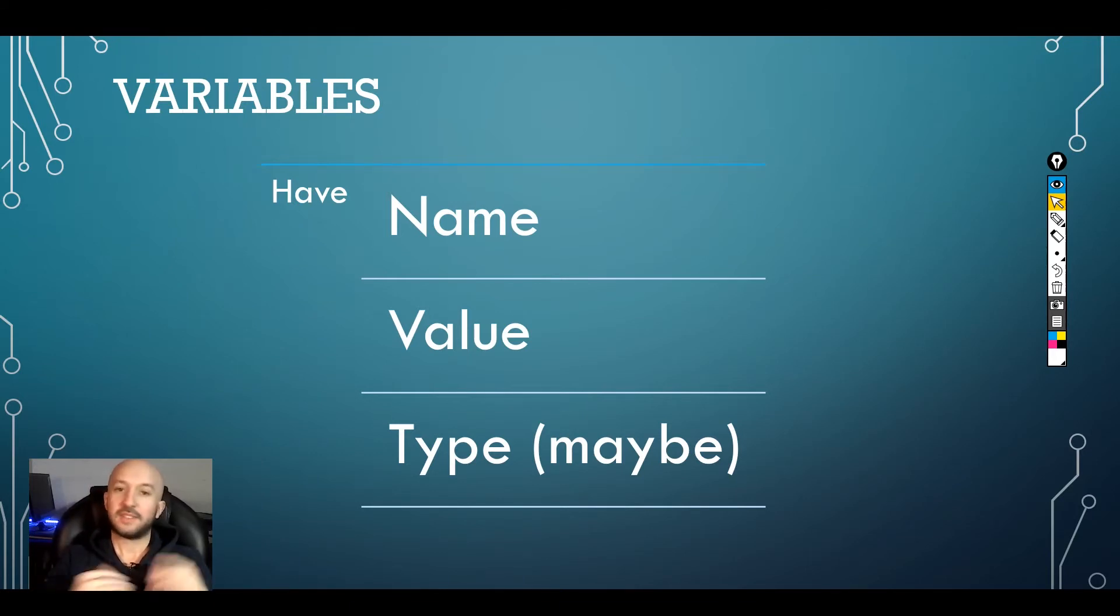A variable has a name, a value and maybe a type. For the purpose of this course, we are going to be working with types. I think they provide a great foundation to understand how all the typing system works.